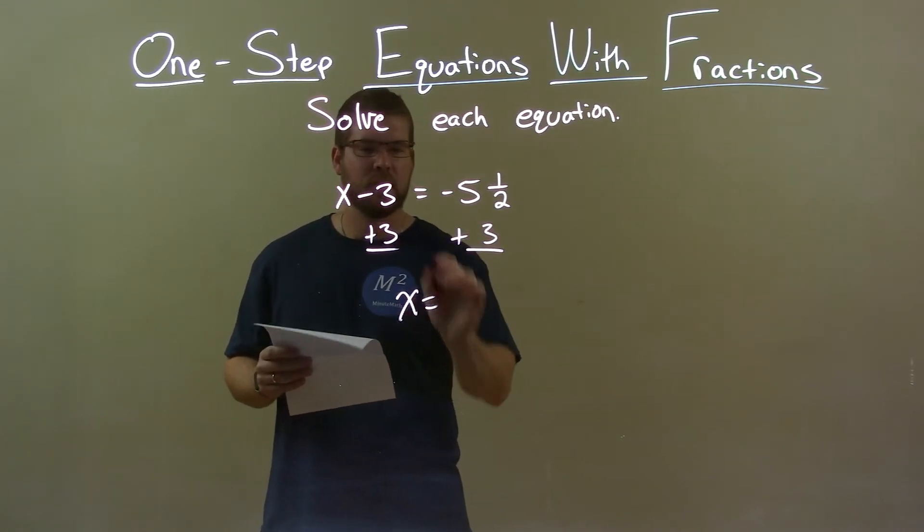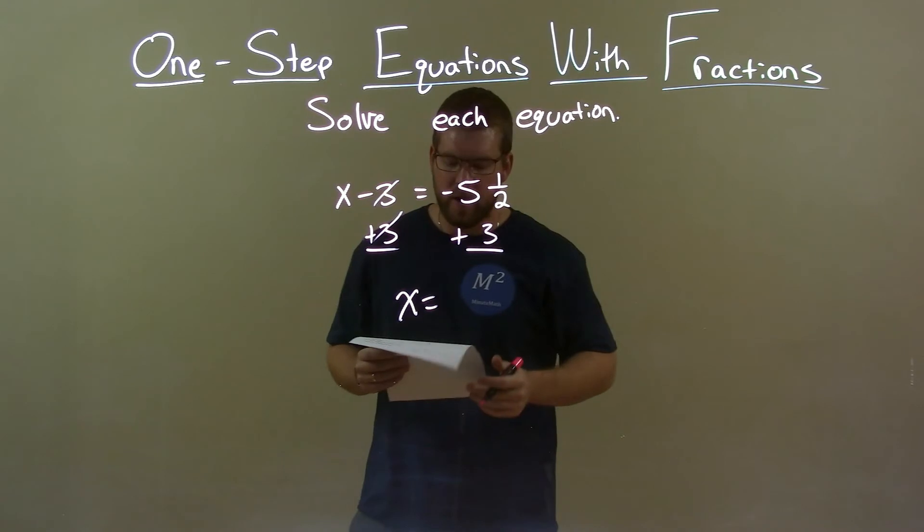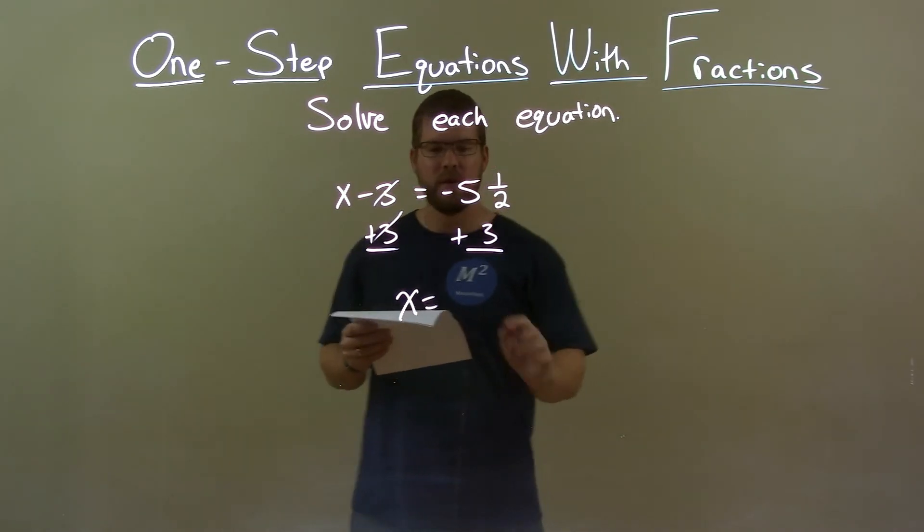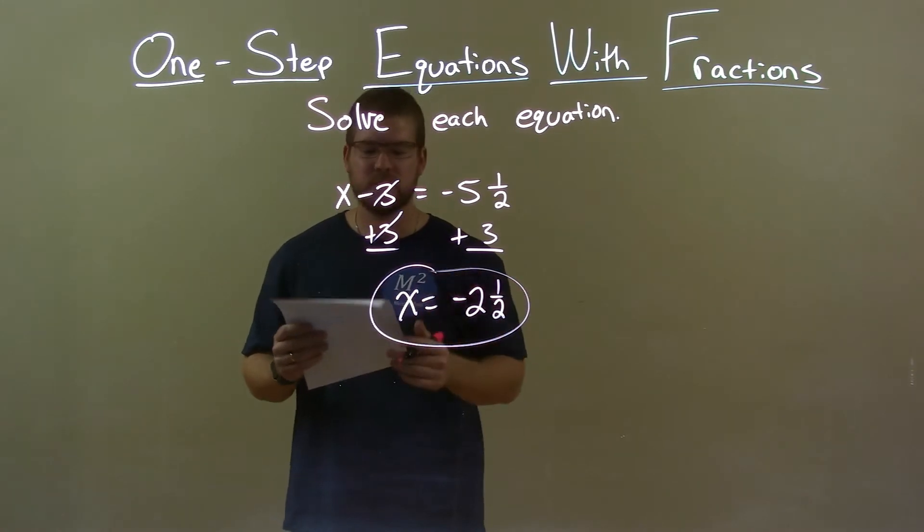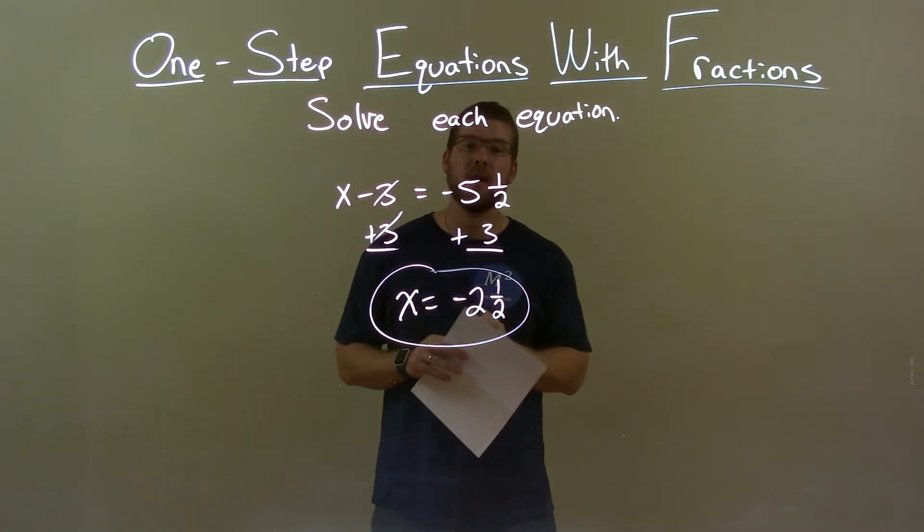we're left with x by itself on the left. The 3s cancel. On the right, negative 5 and 1 half plus 3 is negative 2 and 1 half. And so our final answer is x equals negative 2 and 1 half.